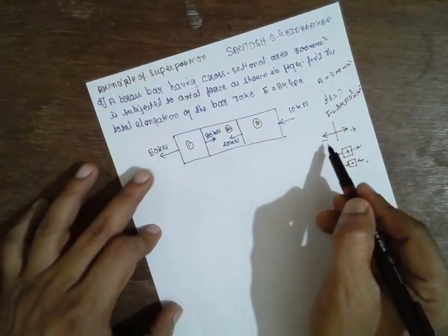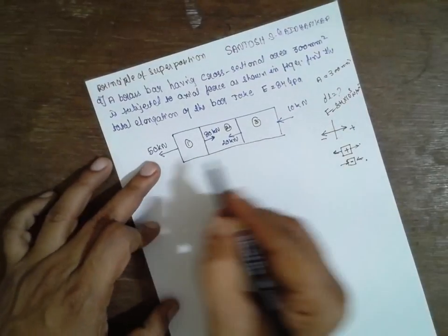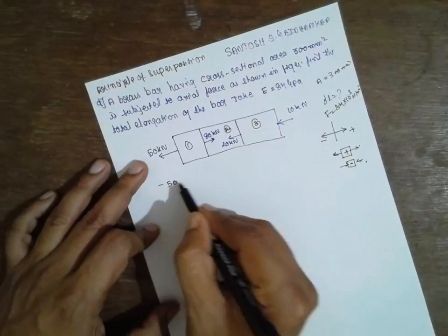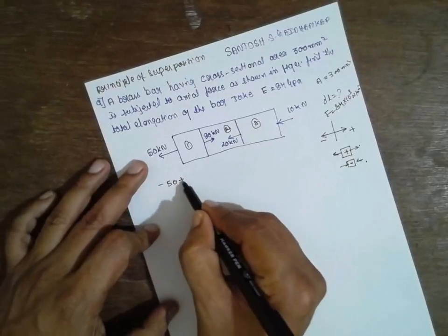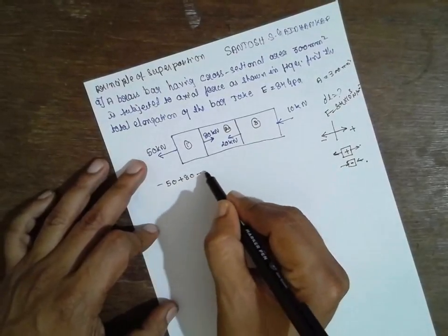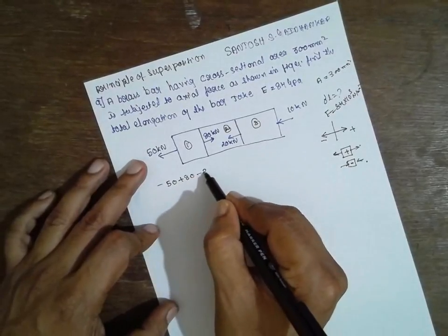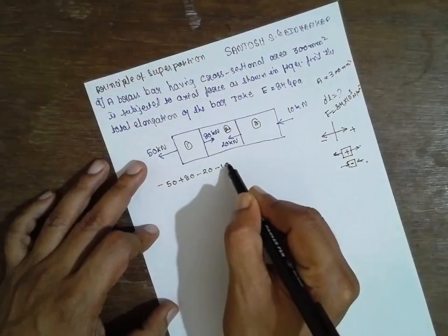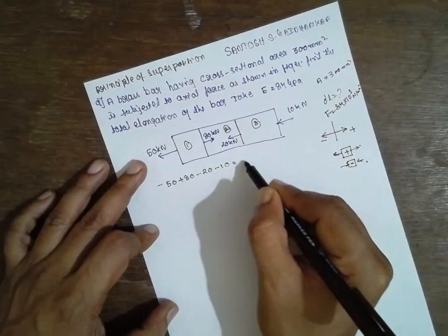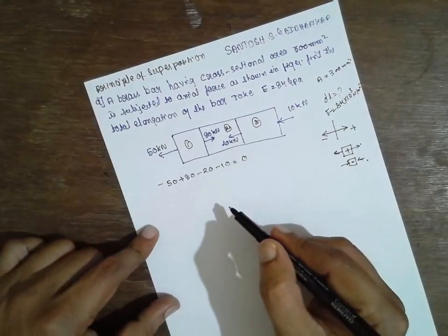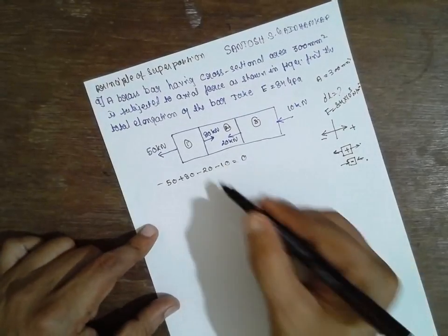Now checking the equilibrium condition: 50 + 80 − 20 − 10 = 0. This satisfies the equilibrium condition.